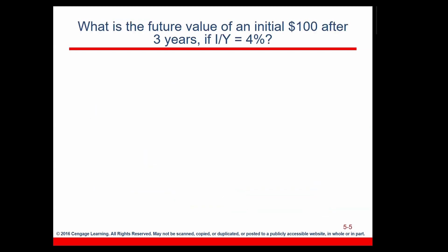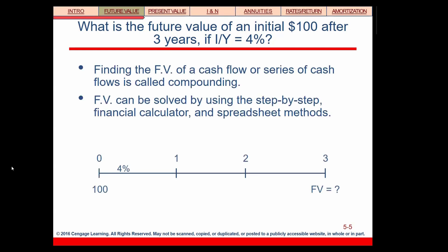So let's move to specific problems. In this problem, we are asked to calculate the future value of initial $100 after three years if the interest rate per year is 4%. So to answer this question, we draw the following timeline. The timeline should be three years long. And we have $100 right now. Zero always represents now. Now the question is, what's the value of that $100 after three years?